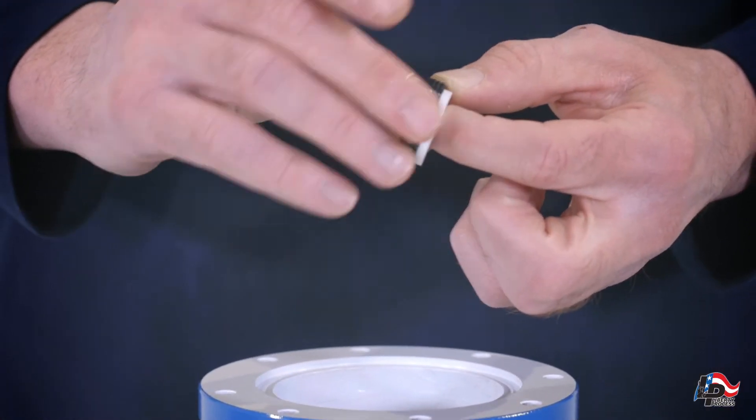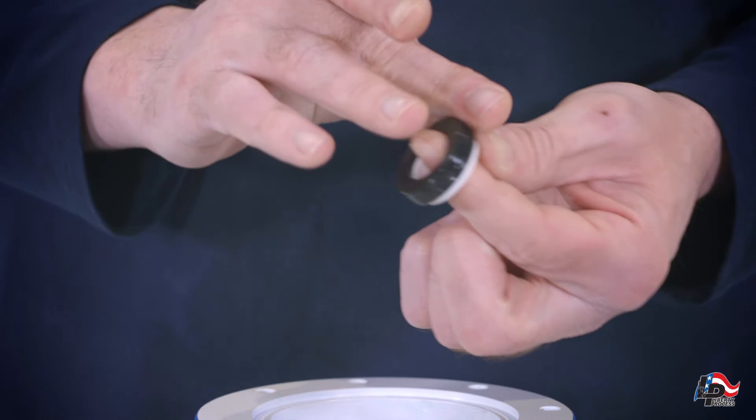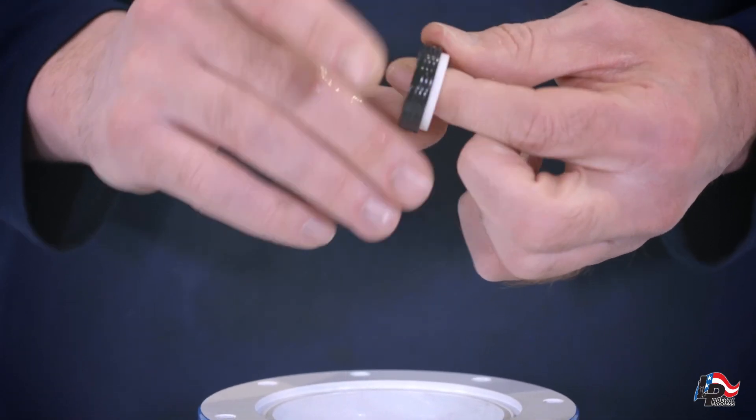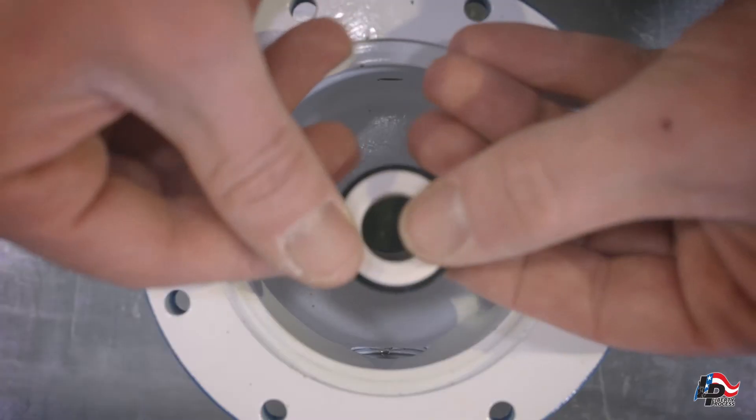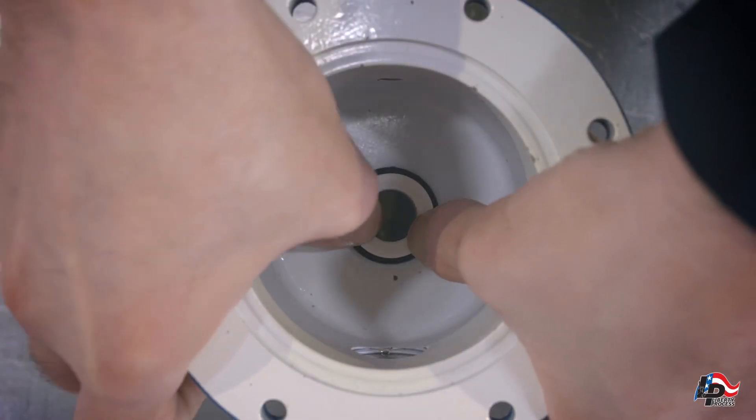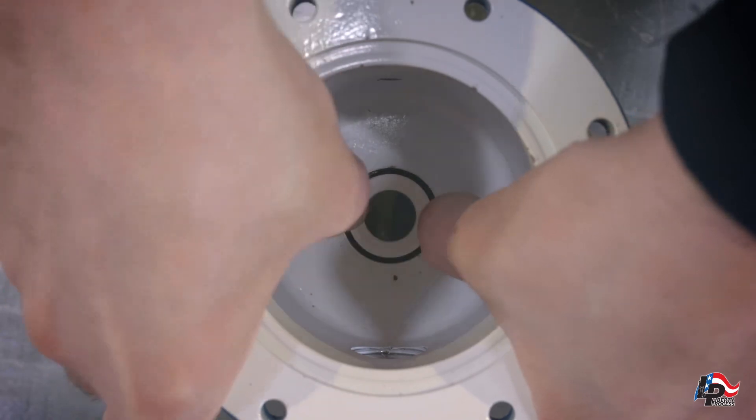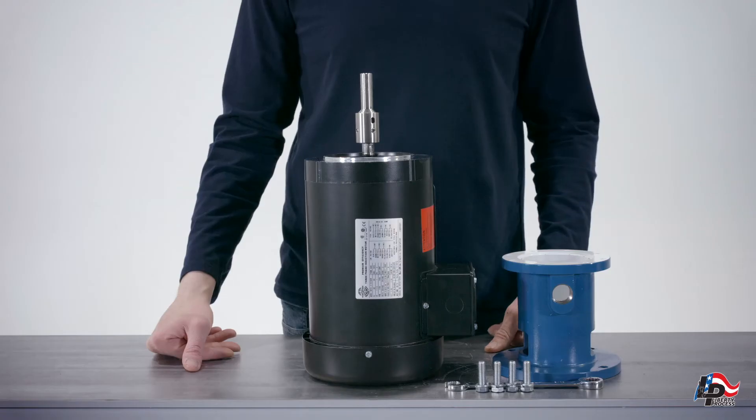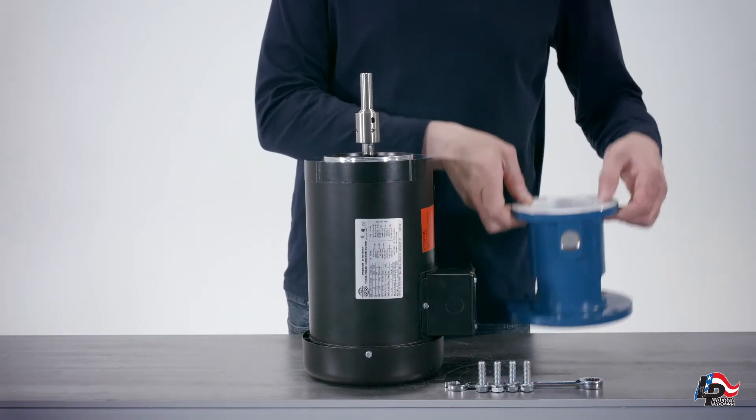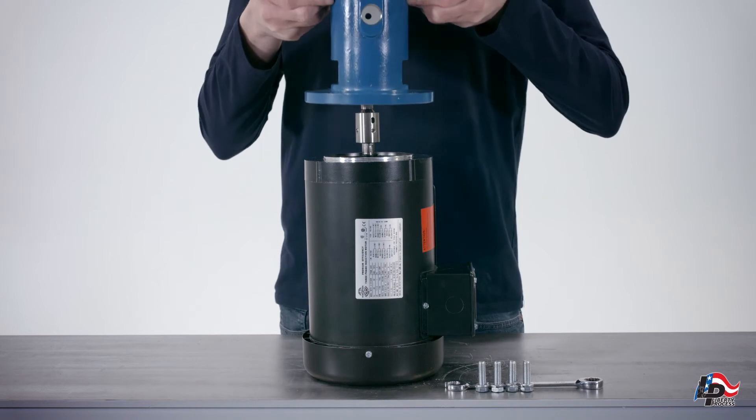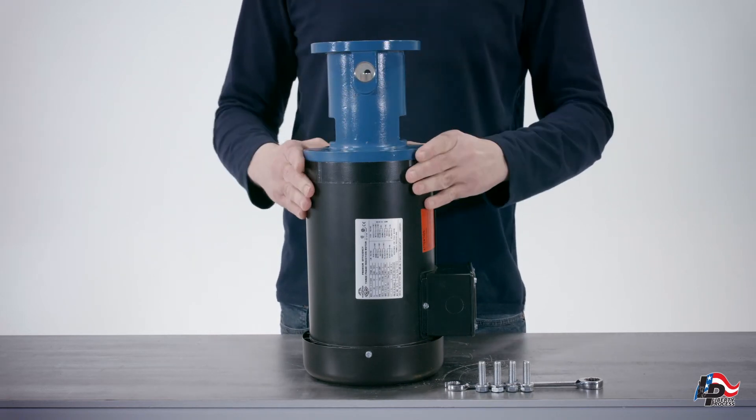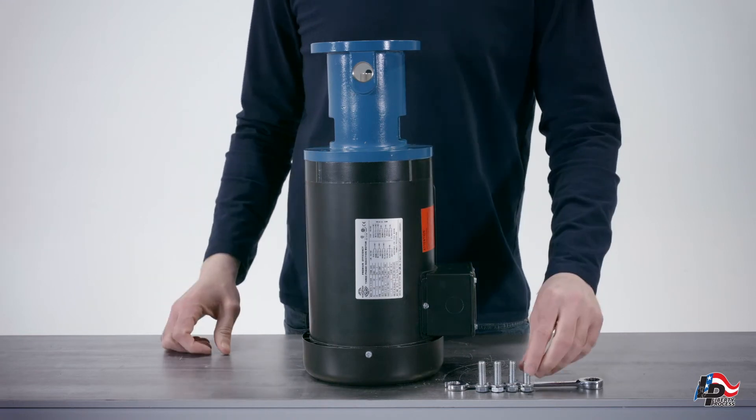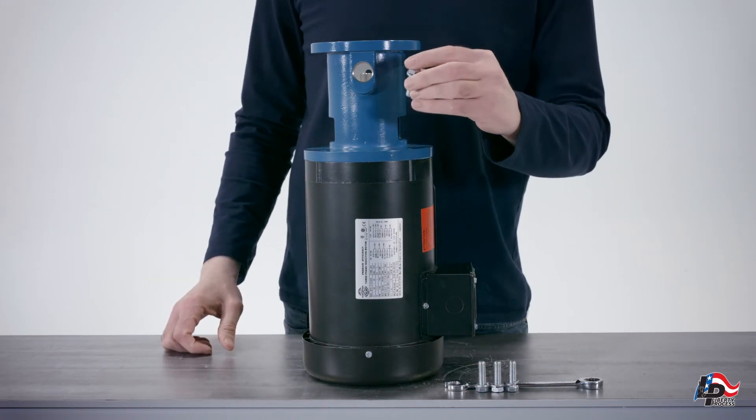Lubricate the outer diameter of the seal stationary face with liquid soap. Using your thumbs, gently press the stationary face of the seal into the discharge casing. Install the discharge casing onto the motor, taking care not to damage the seal on the stub shaft. Tighten the discharge casing onto the motor using the four 9-16-inch bolts.